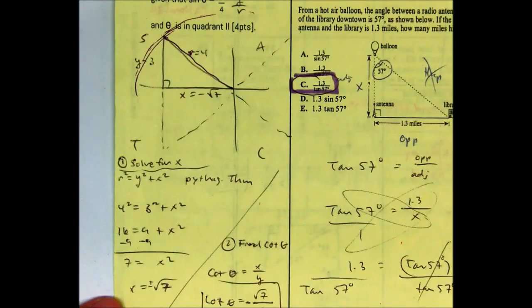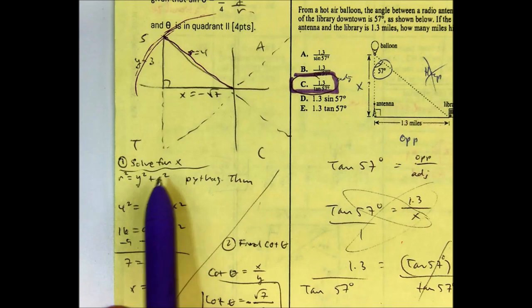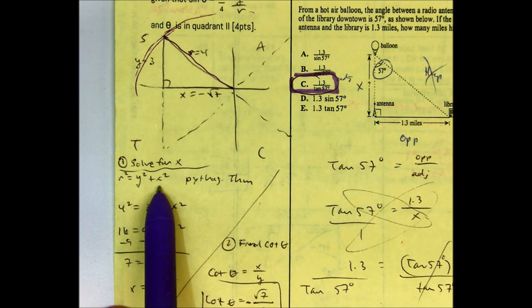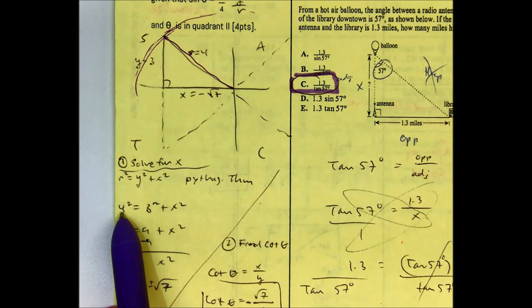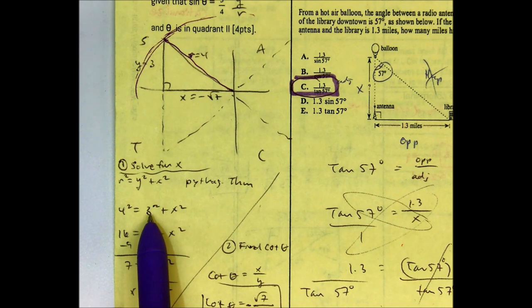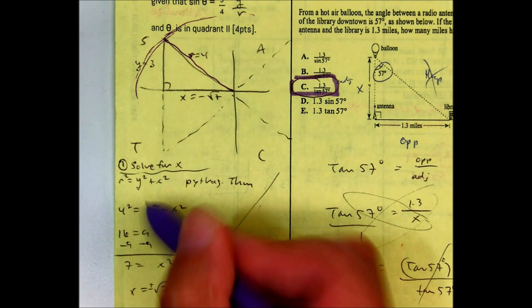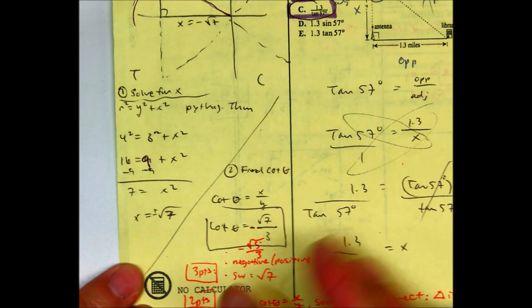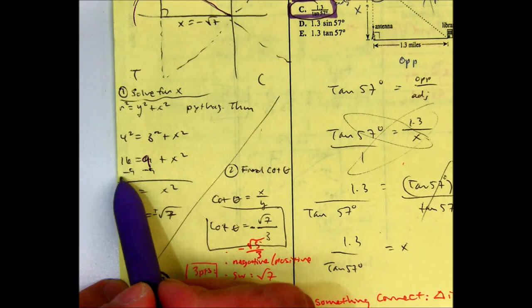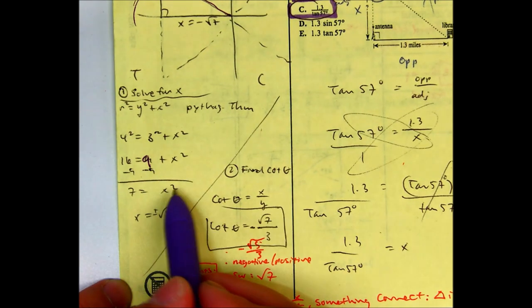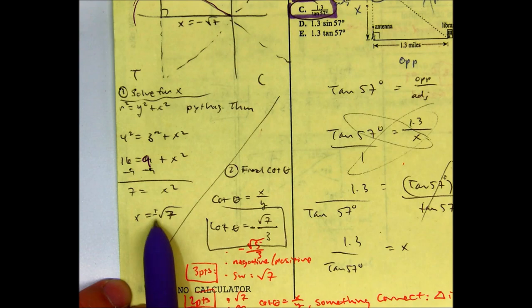The first thing I'm going to do here is solve for x. Pythagorean theorem is r squared equals y squared plus x squared. Your r value is 4. Your y value is 3, so 4 squared gives you 16. 3 squared gives you 9. From here, I subtract 9 from both sides. I take the square root of both sides to get rid of the exponent. x is equal to plus or minus radical 7.